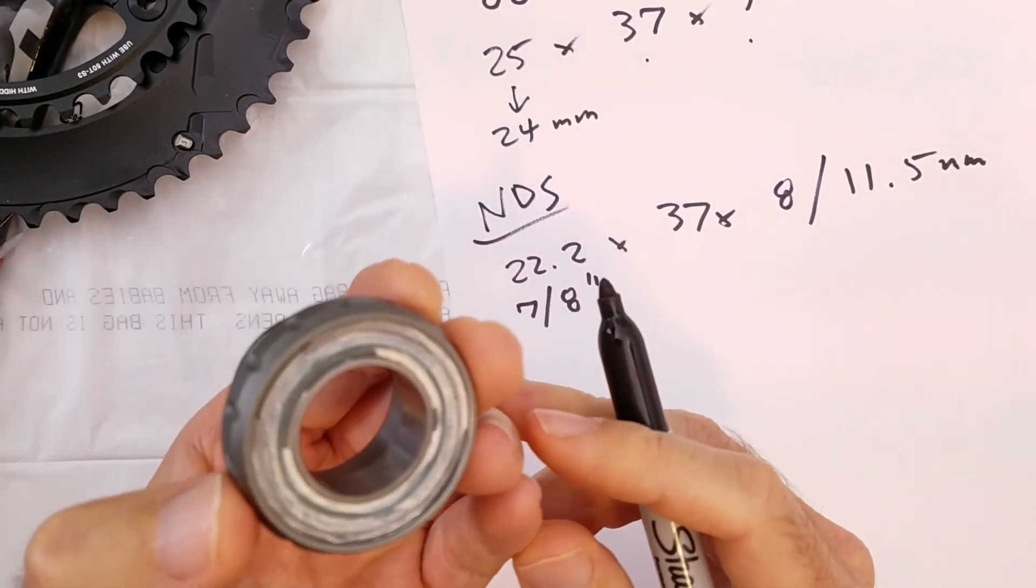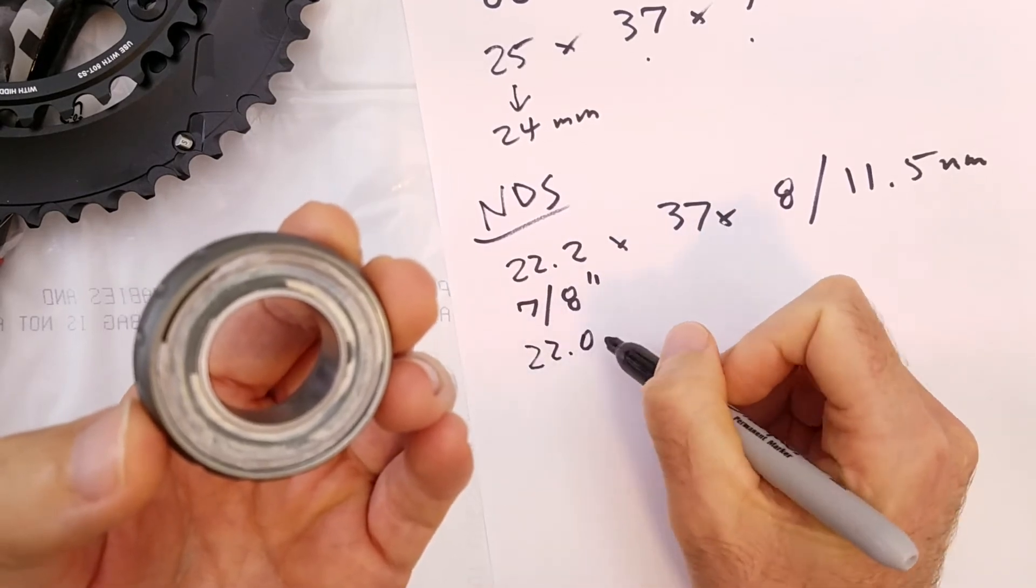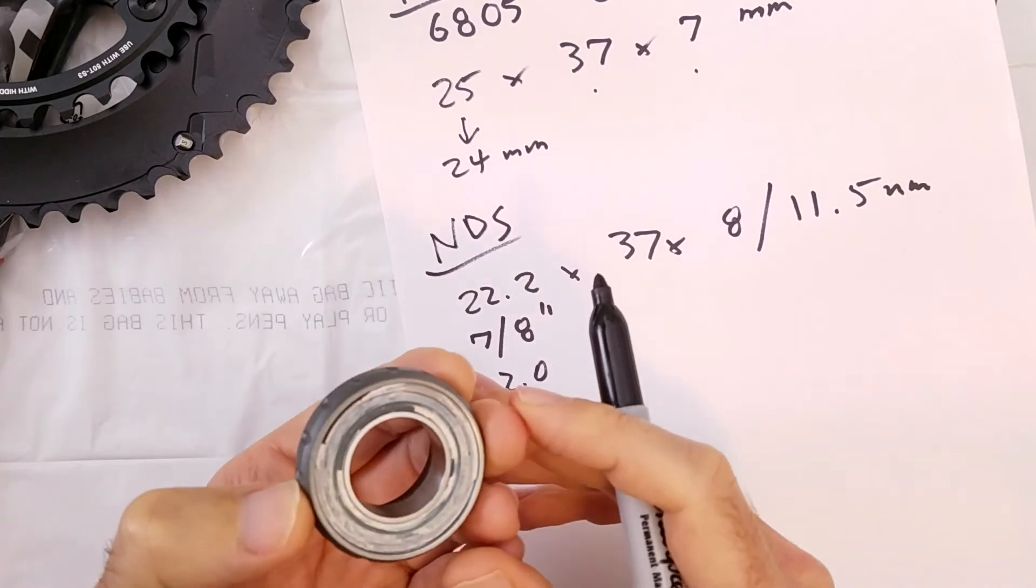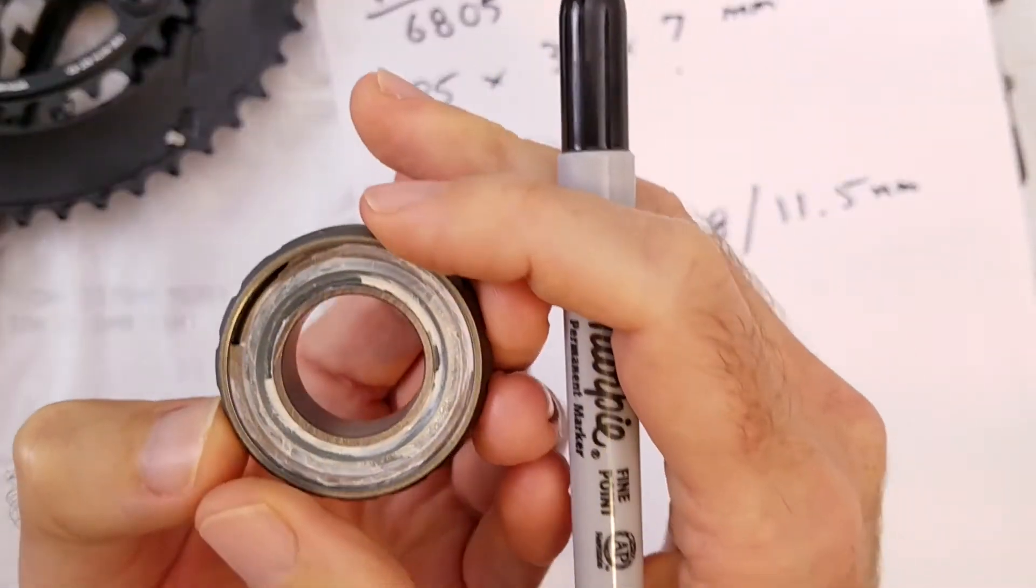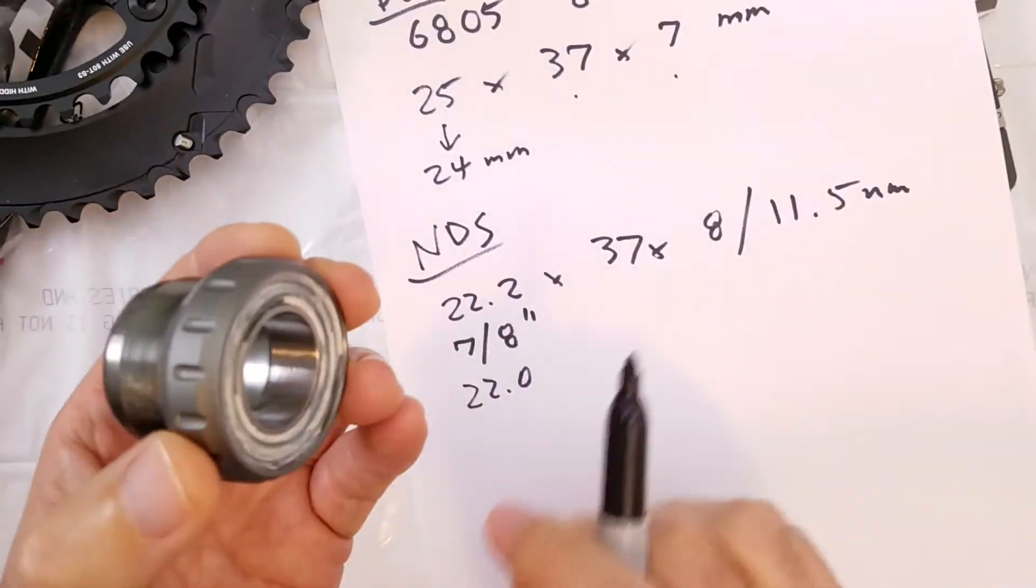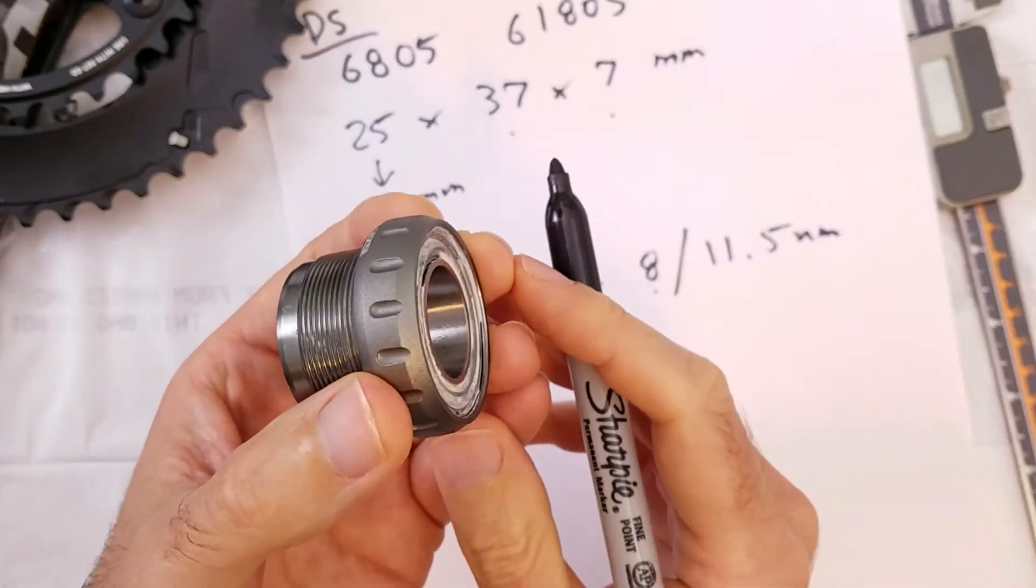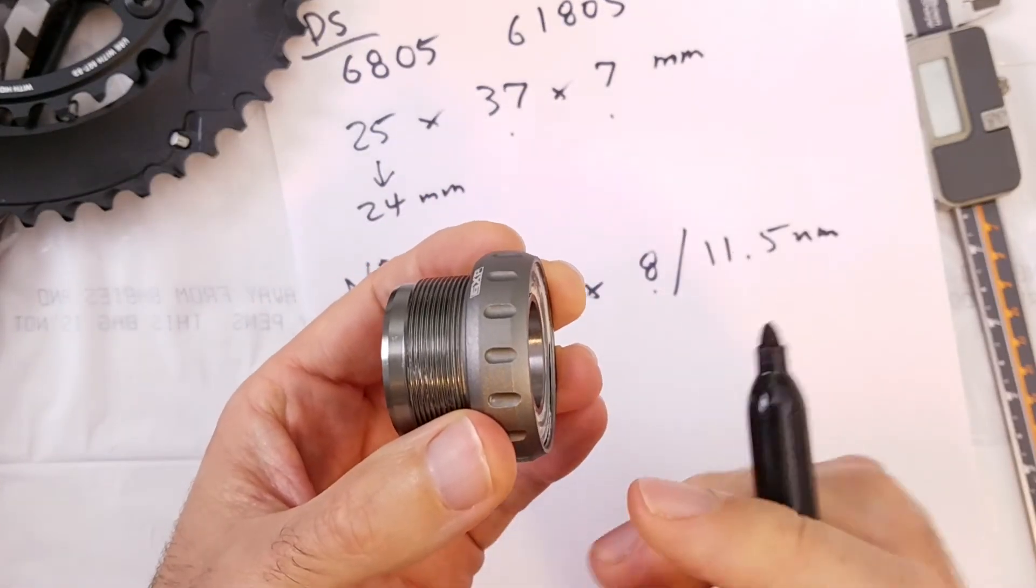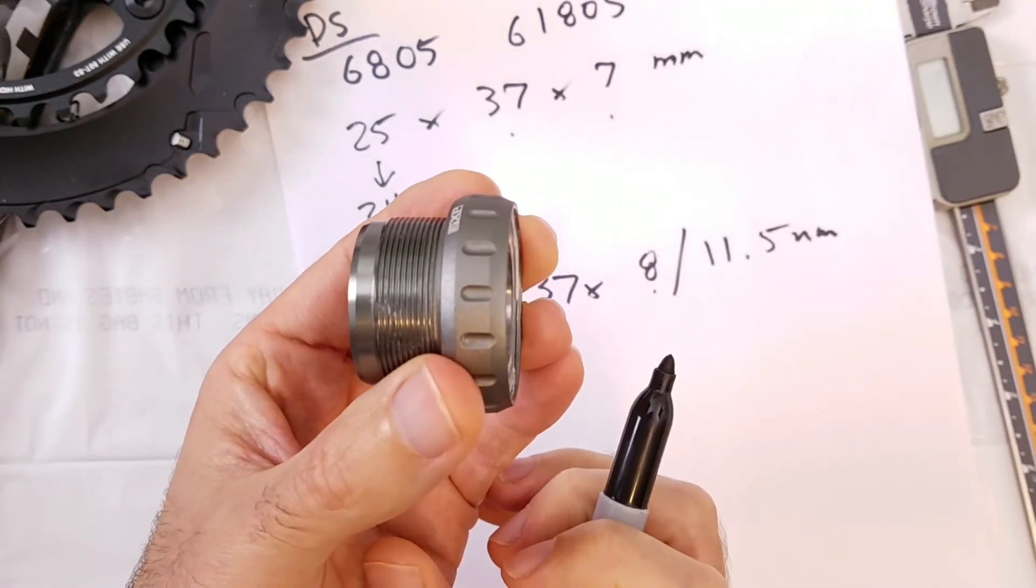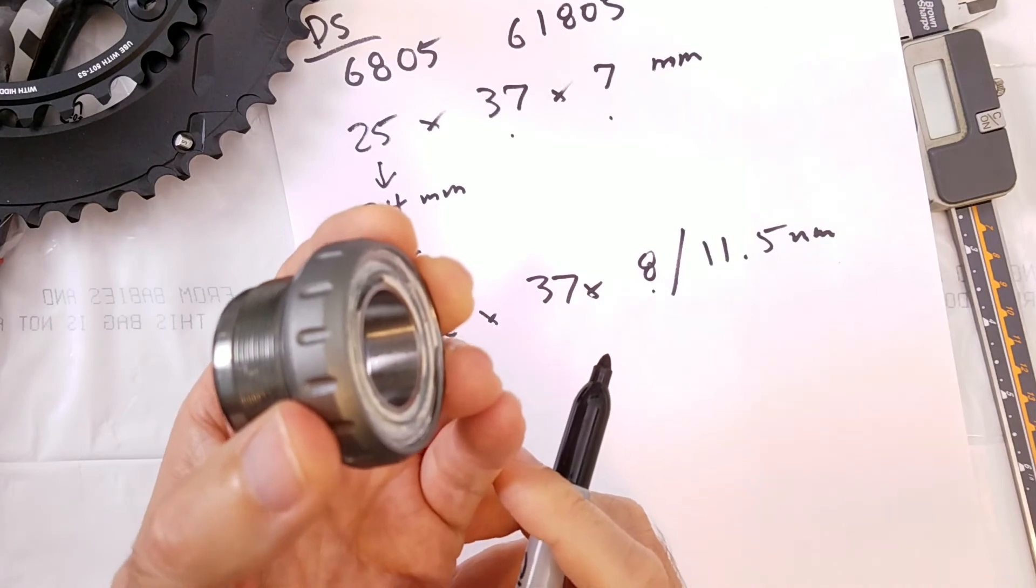I talked to another bearing manufacturer for SRAM GXP and their bearings are very close to 22.0 millimeters even. But anyway, the outside diameter is 37 millimeters. And the width of the bearing, the outer race has a width of 8 millimeters, but the inner race extends towards the centerline of the bike and has a width of 11.5 millimeters.